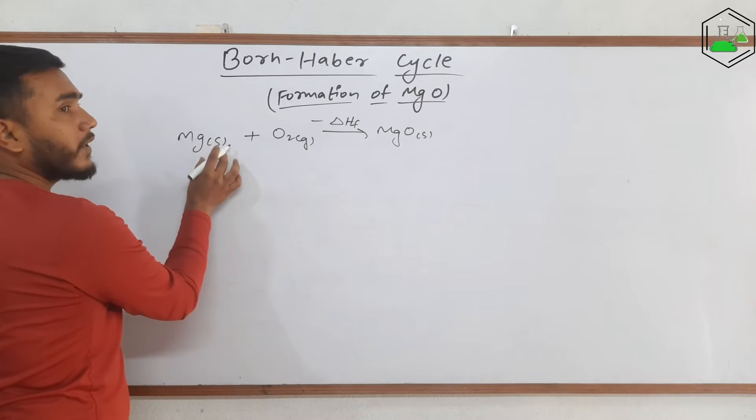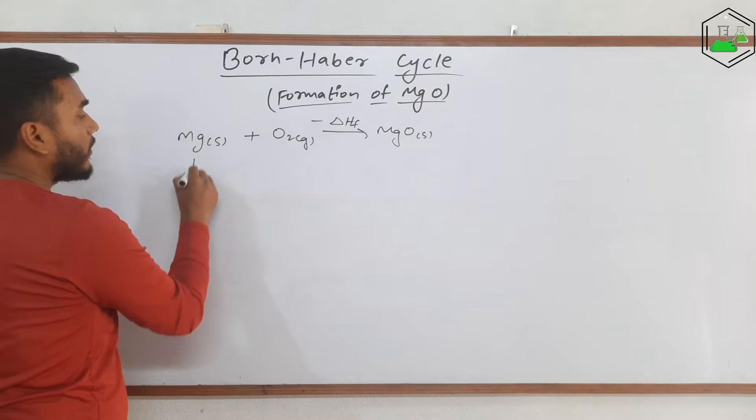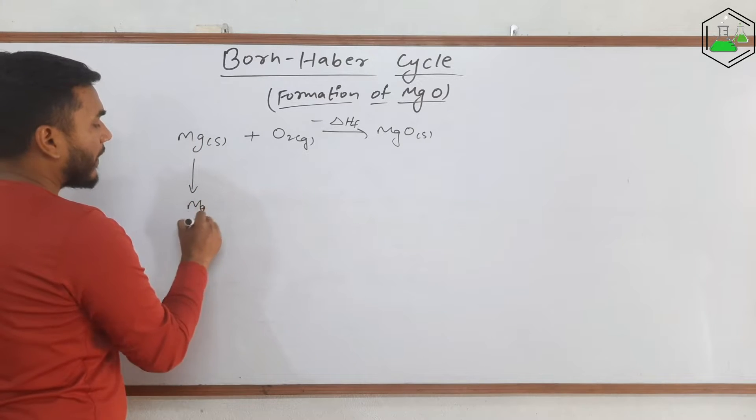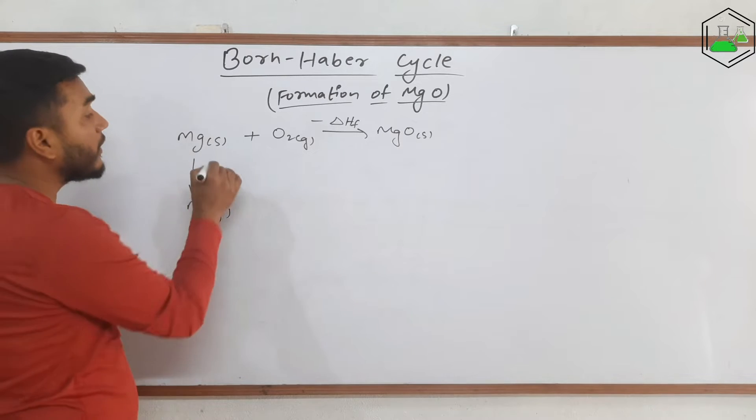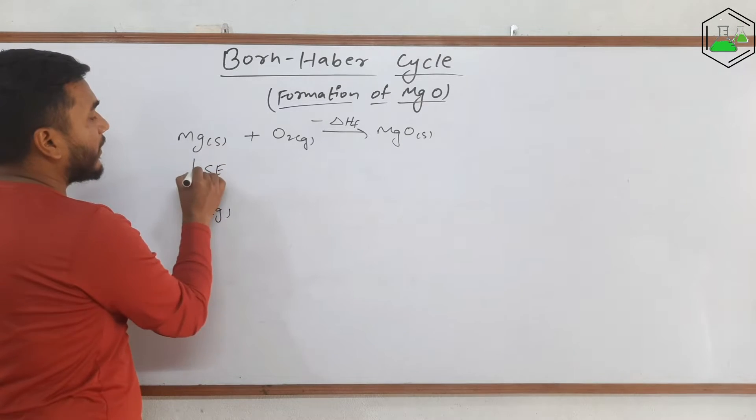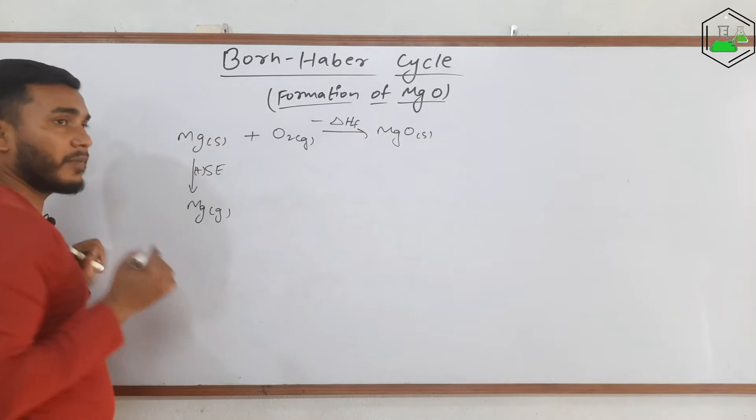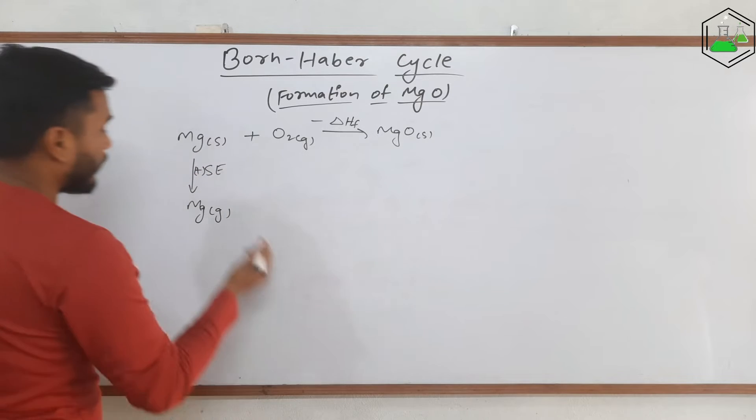Now this solid needs to convert into gaseous first of all. To convert into magnesium gas it will need some energy. That energy is sublimation energy and the sign is plus because we are providing the energy to the system.